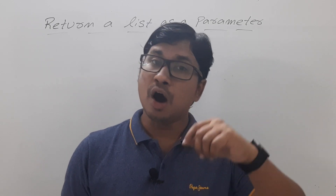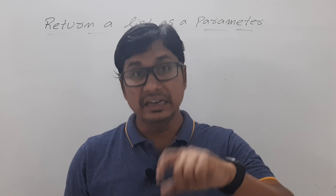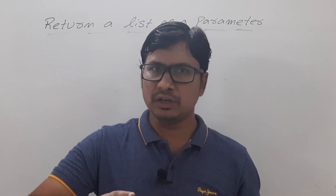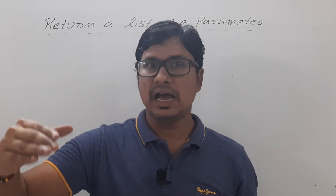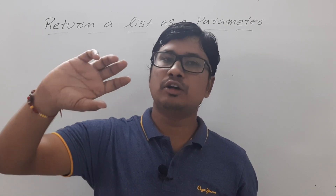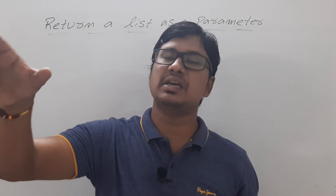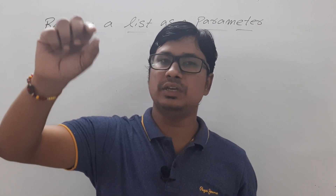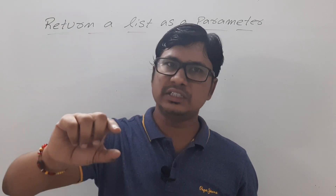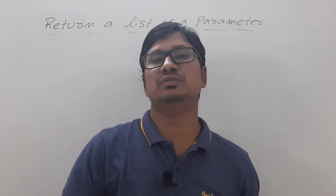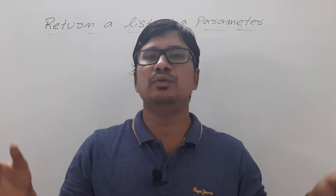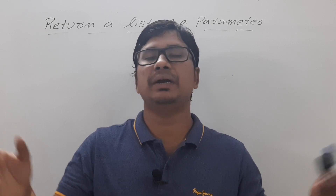In this video I want to discuss how you can return a list from a function. I will pass one list as a parameter to the function, then compute even numbers and odd numbers as two separate lists. Even numbers will be stored in one list, odd numbers in another list, and those two lists will be returned from the function to the calling function. I hope you will enjoy this video, so please watch the complete video for better understanding.